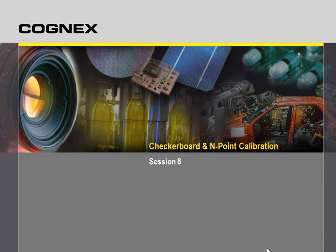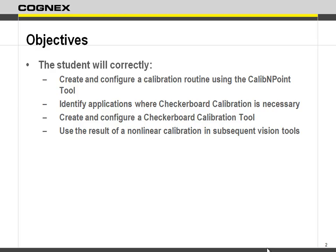We're going to keep plugging on. We want to start getting some calibration in there. We're going to create and configure a calibre endpoint tool, and we're also going to talk about checkerboard calibration. We're not going to implement it but we will talk about it. Then we're going to take a caliper tool and get the measurement of the camera body in real-world numbers, because right now we have it in pixels.